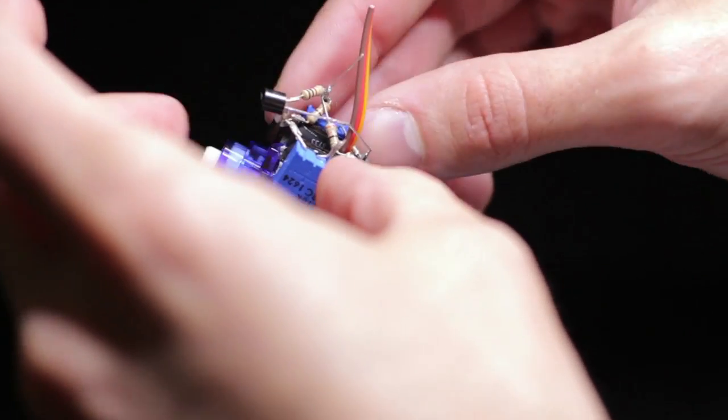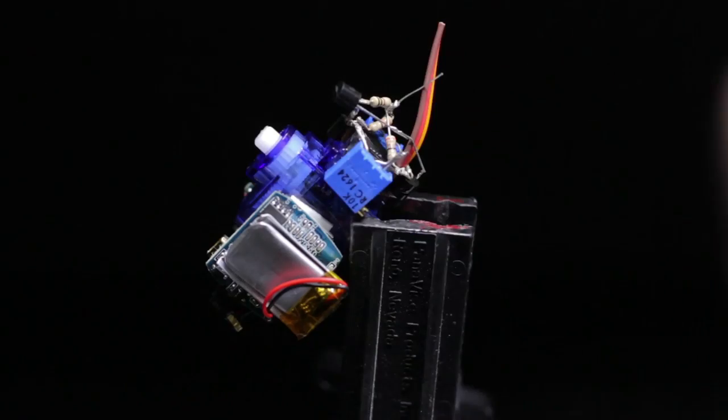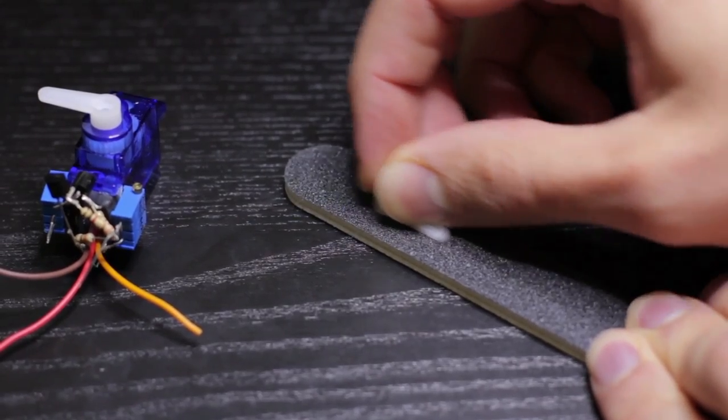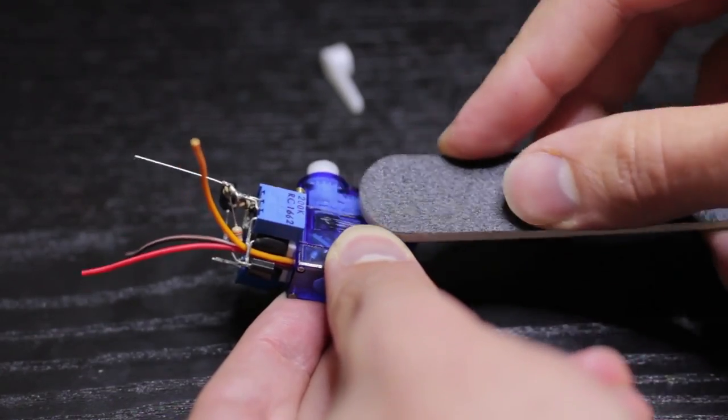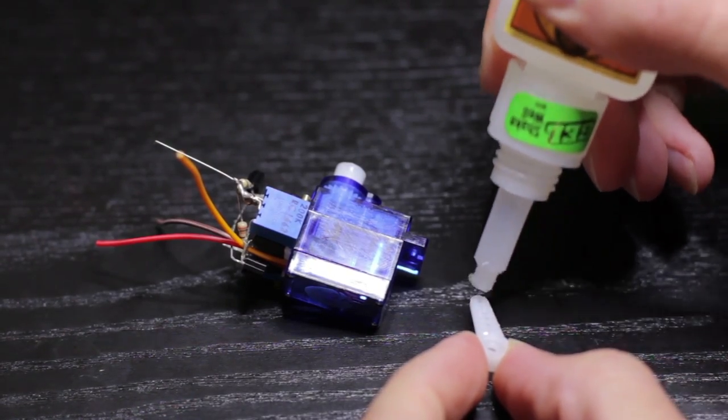Then connect the joystick potentiometers to the circuit with Cat 6 cables. I sanded the servo horn and sanded the edge of the enclosure of one of the servos so that both servos could stay connected and act as one unit.